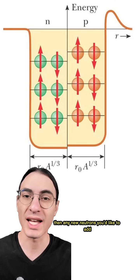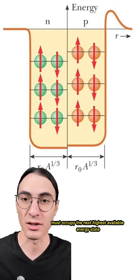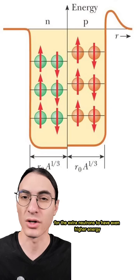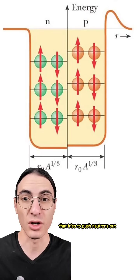So if you already have lots of neutrons, then any new neutrons you'd like to add must occupy the next highest available energy state. This requirement for the extra neutrons to have even higher energy effectively adds a repulsive pressure that tries to push neutrons out.